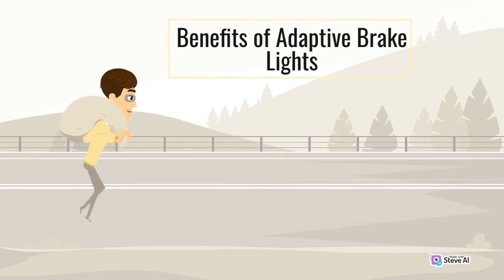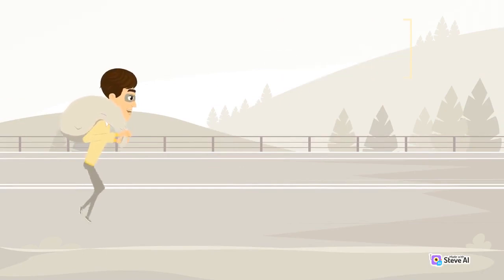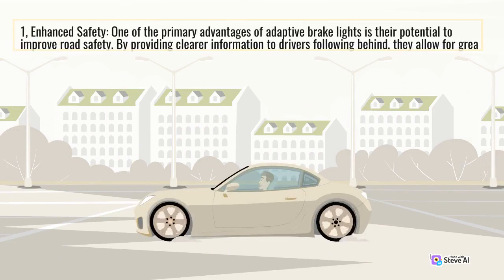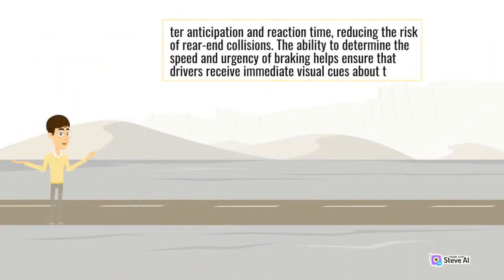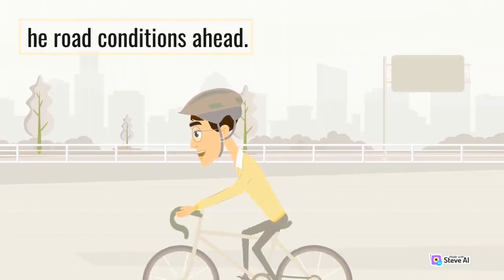Benefits of Adaptive Brake Lights. 1. Enhanced Safety: One of the primary advantages of adaptive brake lights is their potential to improve road safety. By providing clearer information to drivers following behind, they allow for greater anticipation and reaction time, reducing the risk of rear-end collisions. The ability to determine the speed and urgency of braking helps ensure that drivers receive immediate visual cues about the road conditions ahead.